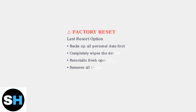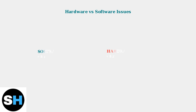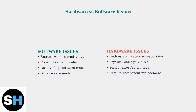When all software troubleshooting fails, a factory reset becomes the last resort. This completely wipes the device and reinstalls the operating system from scratch. Hardware failures require professional diagnosis and repair. Unlike software issues, hardware problems involve physical component replacement and specialized tools.